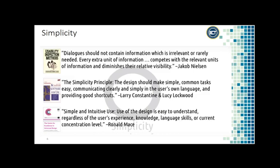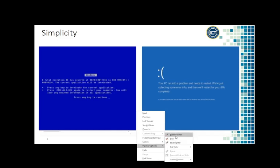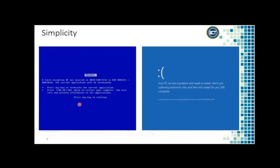For instance, this infamous blue screen of death in Windows is a nice application of Nielsen's heuristics — the user should only be given as much information as they need. Based on Jacob Nielsen's definition, looking at the left side, there is a lot of information the user does not need to know, like the code, the current application, press any key to terminate. The font and color are also not user-friendly.